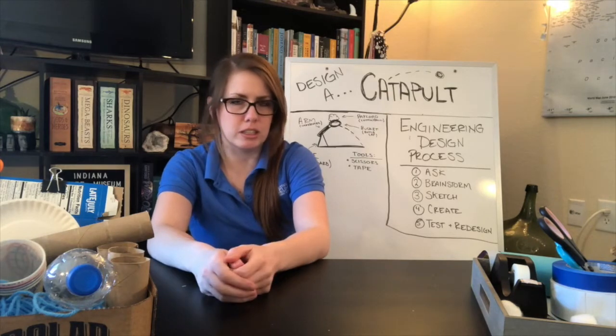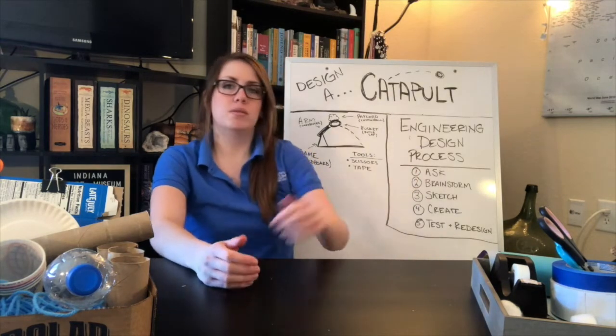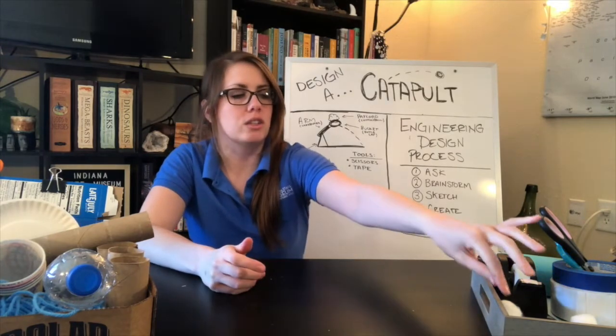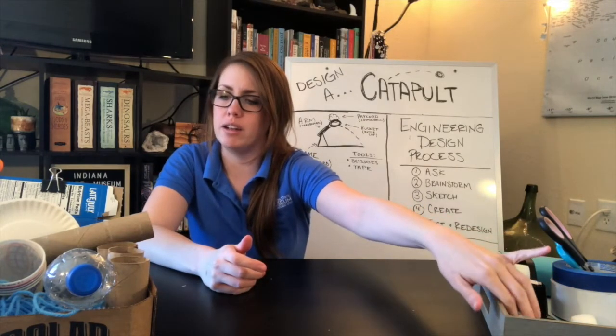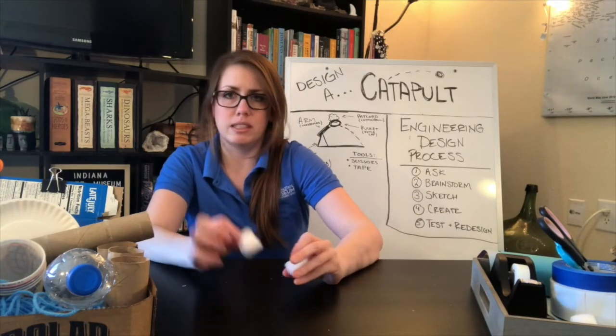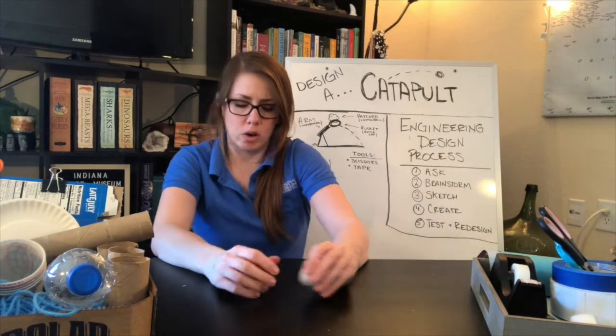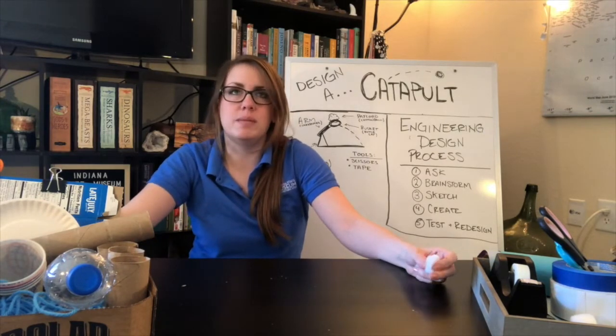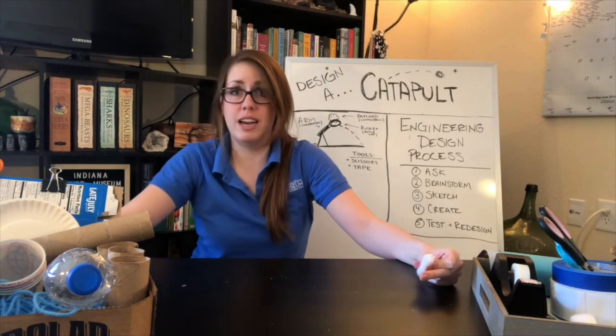So our first step here today is to ask what we're doing and what our constraints are as we build. And so our challenge is to be able to fling a lightweight object. And a lightweight object that you might be able to use is something like a cotton ball. You could also use something like a cat toy or you could go outside and find something like an acorn. That might work great for your design.